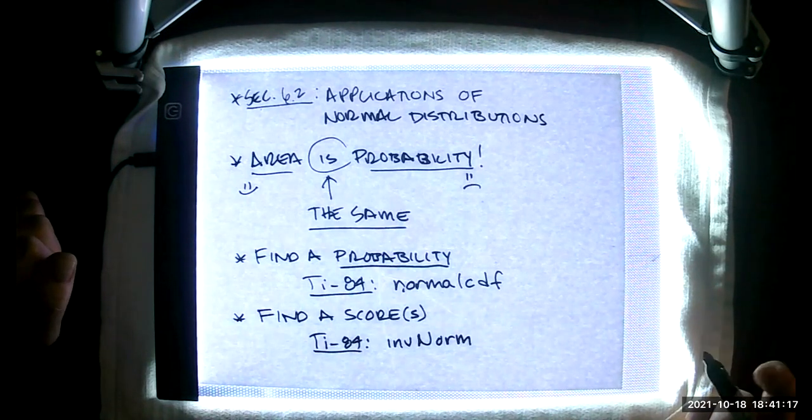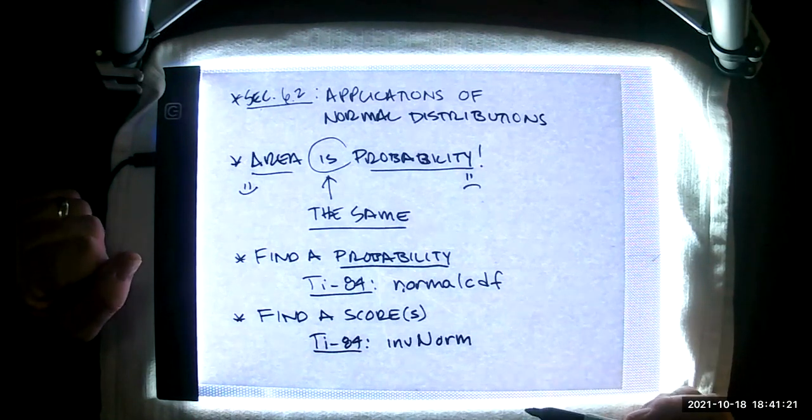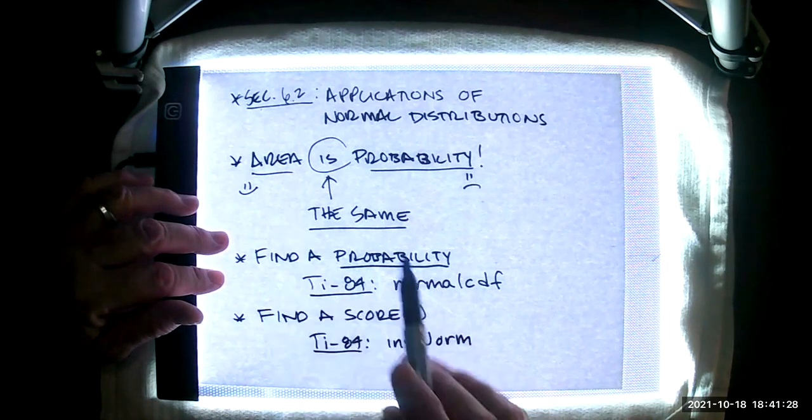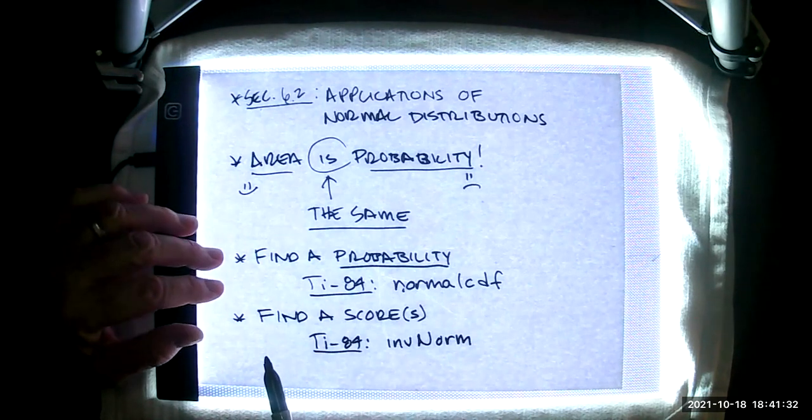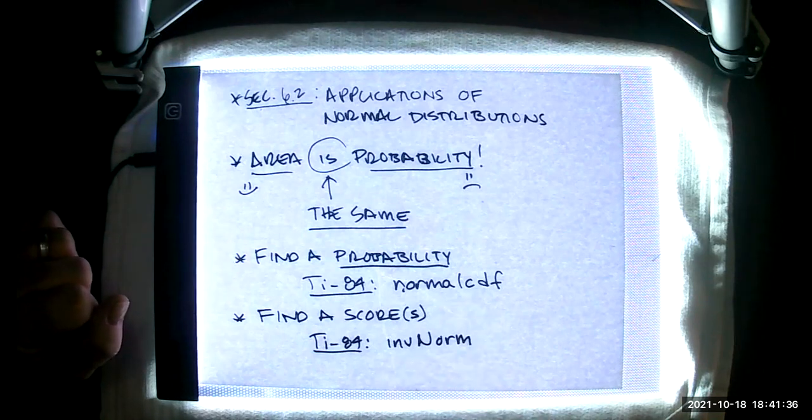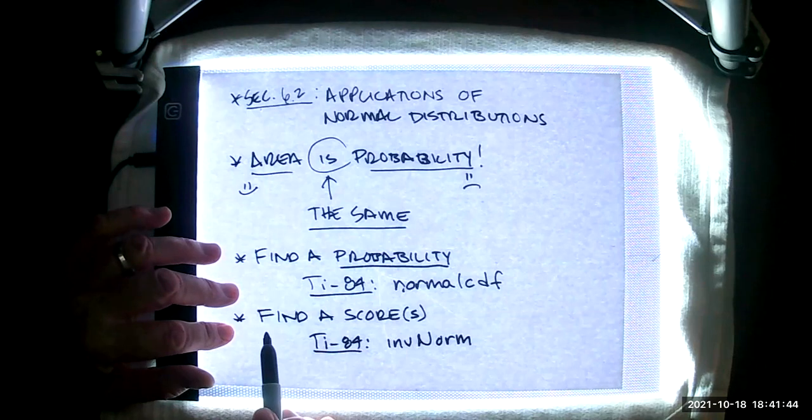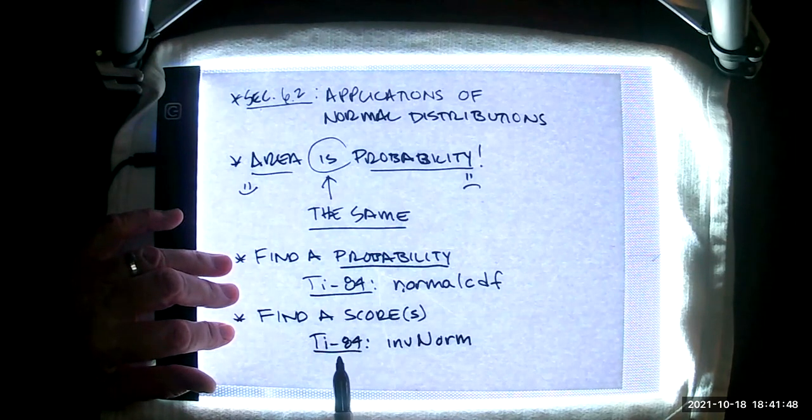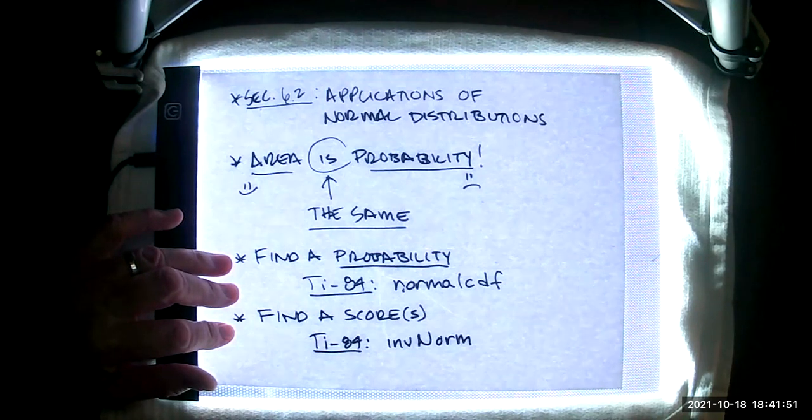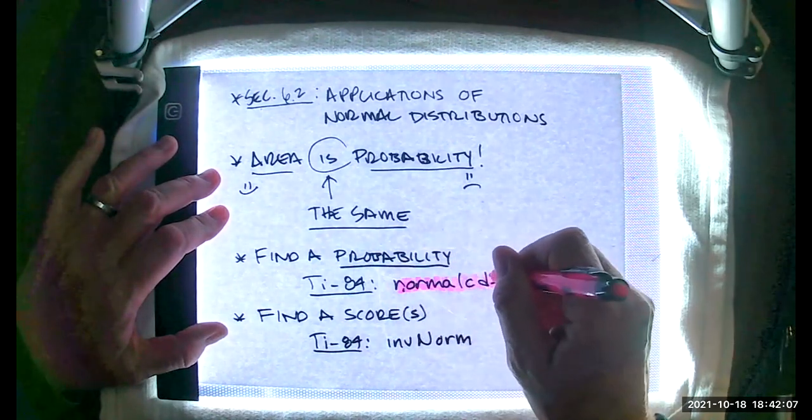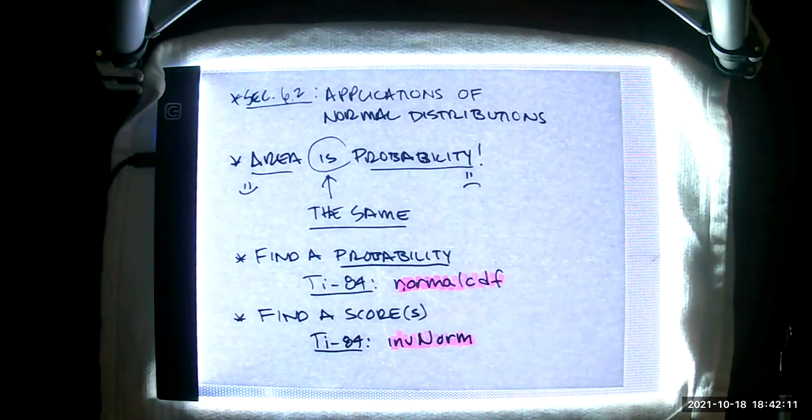That brings us to the two fundamental problems that we look at in 6.1 and in 6.2. The first is calculating or finding a probability. This will be the measurement of some sort of area. The TI-84 tool that we like to use here is the normal CDF tool. You'll see me do a number of examples using that tool. The other basic problem we address is the problem of finding a score. We also use a TI-84 tool called inverse norm. These tools truly are important. I use them all semester long in one form or another once I introduce them.